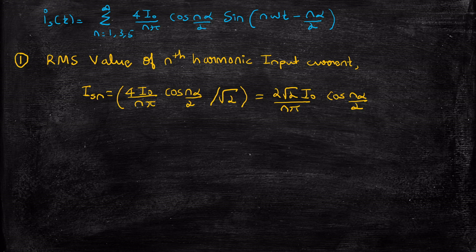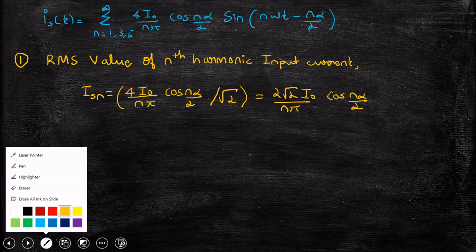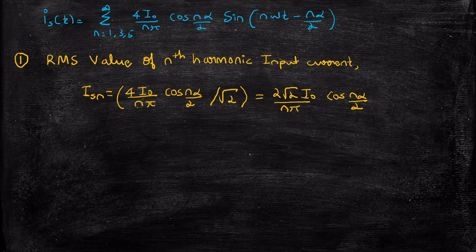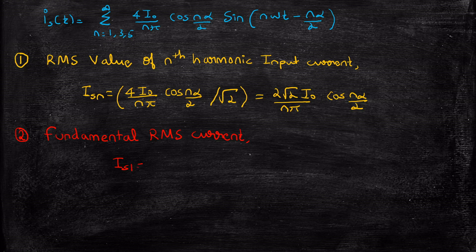Now, what is the fundamental RMS current? All of these are derived from the main expression. The fundamental RMS current I_s1 is obtained simply by substituting n = 1 into I_sn, giving: I_s1 = (2√2 · I_out)/π · cos(α/2).